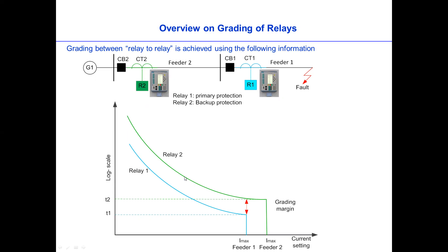So we could do this using plotting grading charts. But what are the information we needed? For example, what we need is we need to know what is the grading margin between these two relays. For example, when the fault is happened at maximum fault current on grading one, on here.